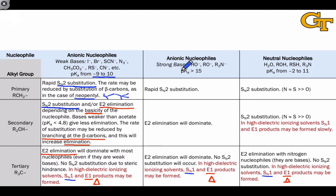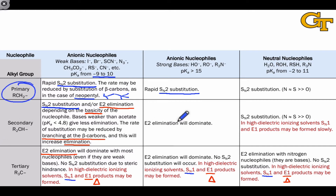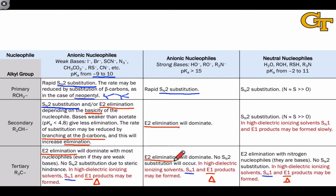Anionic nucleophiles that are also strong bases — whose conjugate acids have relatively high pKas greater than 15 — include things like hydroxide, alkoxides, amides, and carbanions. With primary electrophiles, these will tend to engage in SN2 substitution, reflecting the intrinsic preference of primary substrates for SN2. However, because of the basicity of this class of nucleophiles, when the electrophile is secondary, E2 elimination starts to dominate, especially at high temperatures. In the tertiary case, E2 elimination is going to dominate with no question, as no SN2 substitution will occur.